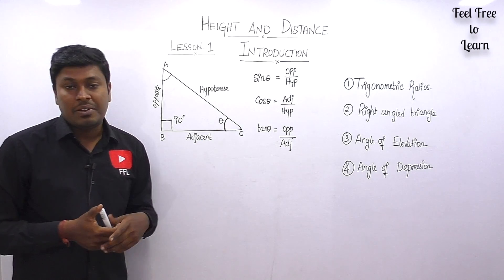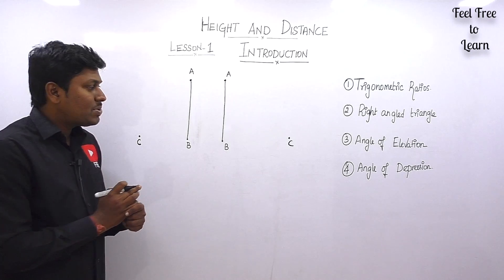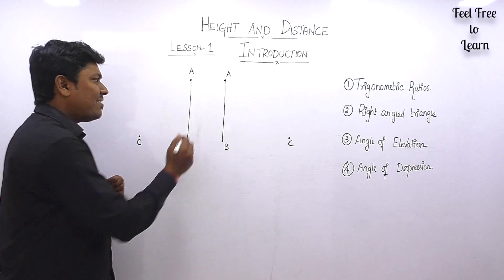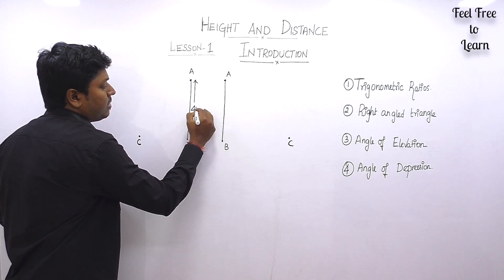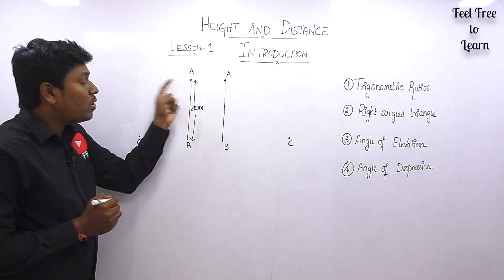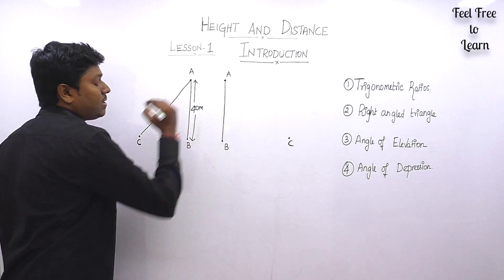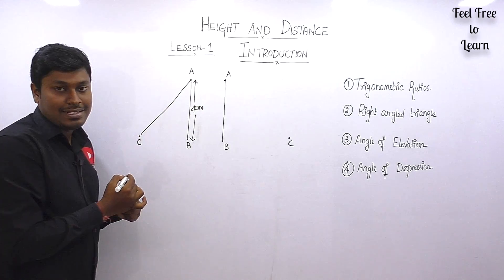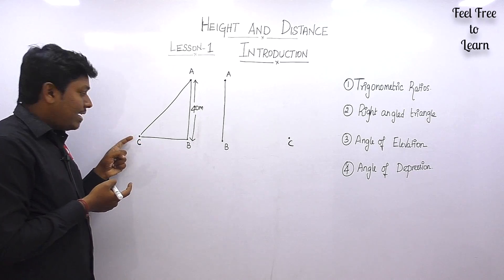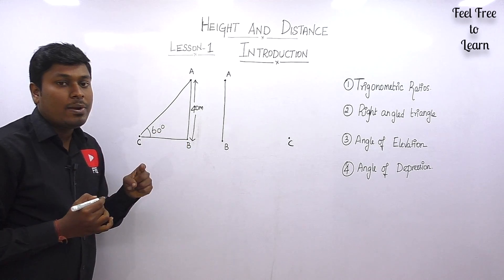Point number three is angle of elevation. Assume a tower AB with height 40 meters and a man standing at point C looking at the top of the tower. When the line of sight goes upward — for example, at 45° or 60° — this is called the angle of elevation.